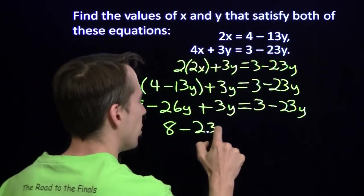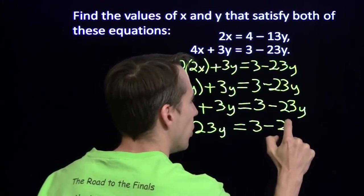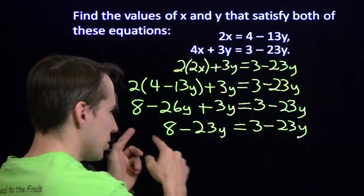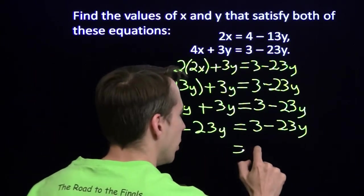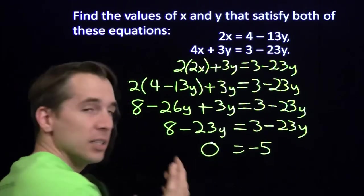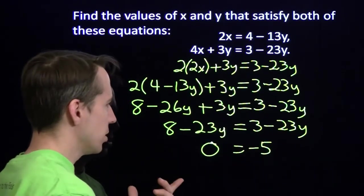8 minus 23y equals 3 minus 23y. So I'll bring the y's over here, put the constants over there. I'll subtract 8 from both sides. 3 minus 8 is negative 5. I'll add 23y to both sides, and I'll get 23y minus 23y is just 0.